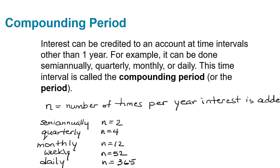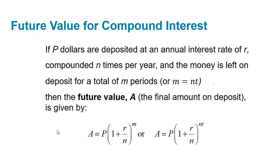When we're calculating compound interest, we'll need to know the number of times per year interest is added, and we call that value n. If the compounding period is semi-annually, for example, n would be 2. If it were quarterly, n would be 4, monthly 12, weekly 52, and daily 365. You'll have to look for these keywords to determine the value of n.